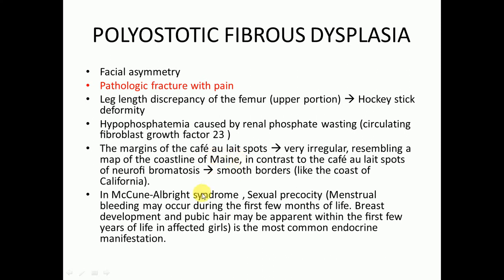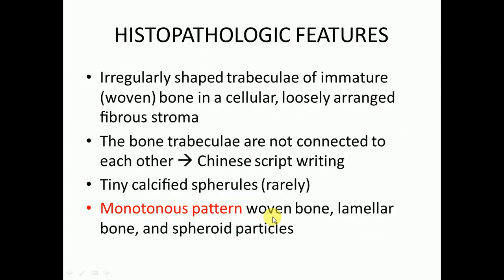In McCune-Albright syndrome, sexual precocity — including menstrual bleeding — may occur during the first few months of life. Breast development and pubic hair may be apparent within the first few years in affected girls. This is the most common endocrine manifestation in patients with McCune-Albright syndrome.